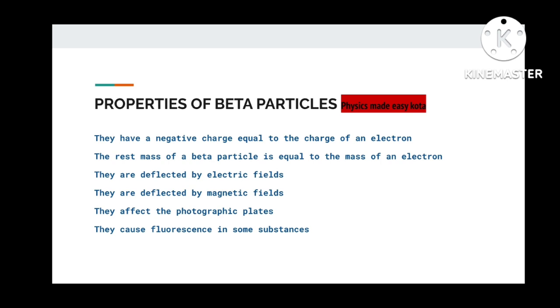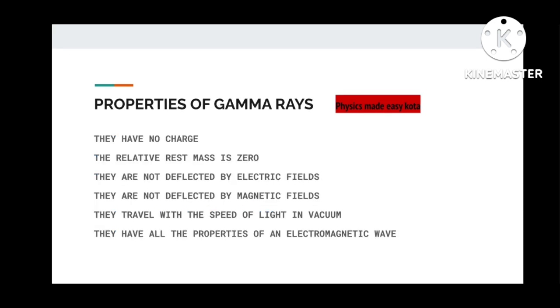Negatively charged rays which are deflected are known as the beta rays. The beta particles are negatively charged particles and their charge equals the charge of the electron. Their rest mass is equal to the mass of the electron. They are also deflected by electric field as well as by magnetic field. They affect photographic plates and they cause fluorescence in some substances.